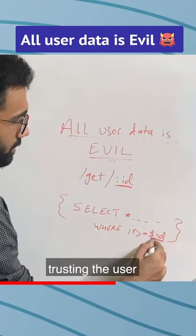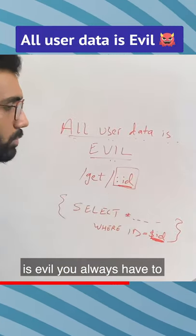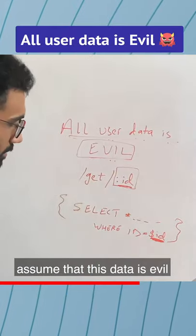The problem is that you are trusting the user. This ID parameter which gets from the user from the frontend is evil. You always have to assume that this data is evil.